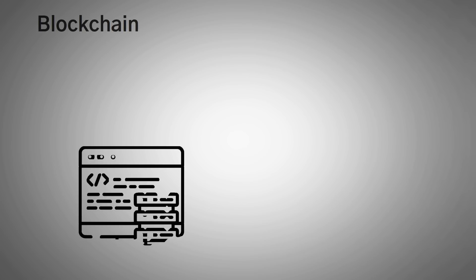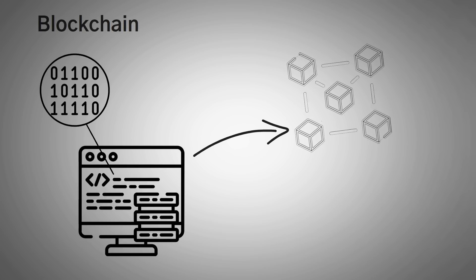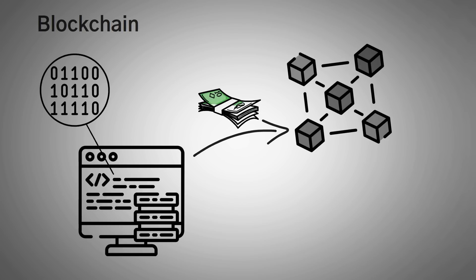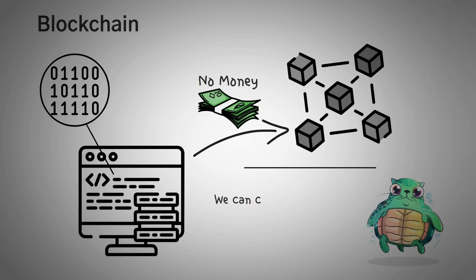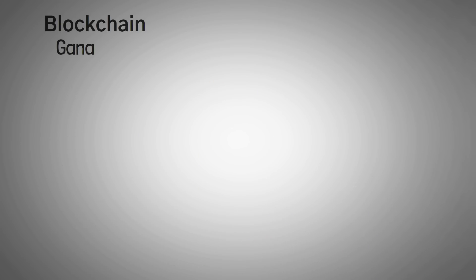Next, let's move into blockchain tools. The next set of tools includes software that allows you to test smart contracts in many different ways. Instead of using a real blockchain, which takes real money to deploy contracts and could be costly to test on, we can create our very own blockchain to test our code with. This way, the cost of an error is very low in comparison. First off, let's talk about Ganache.